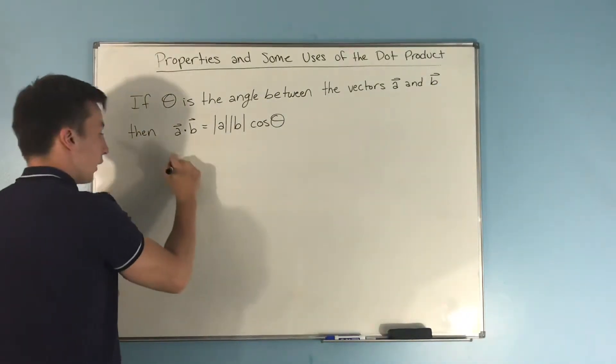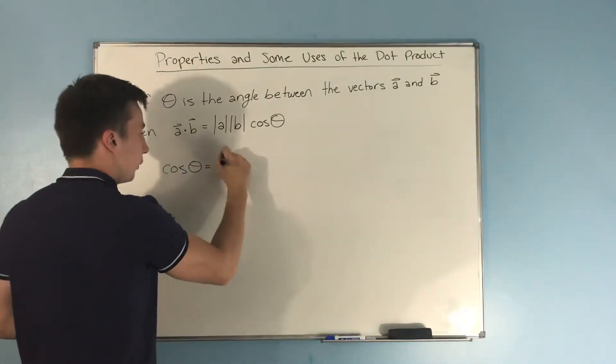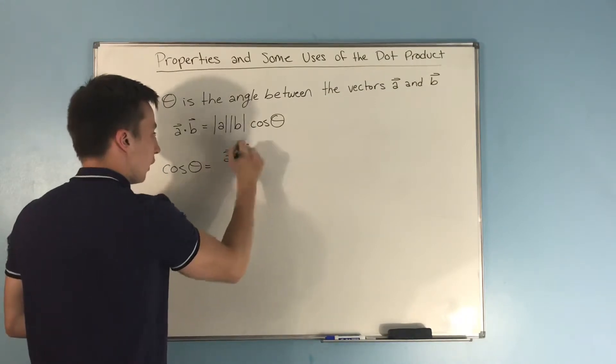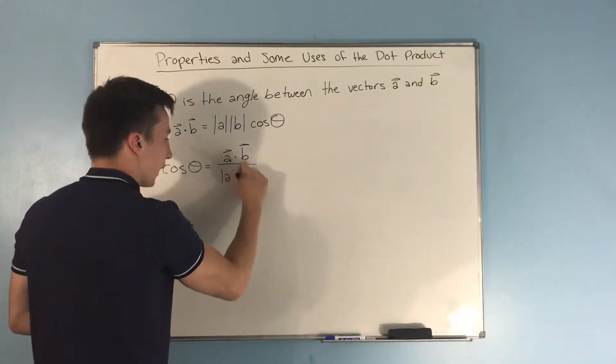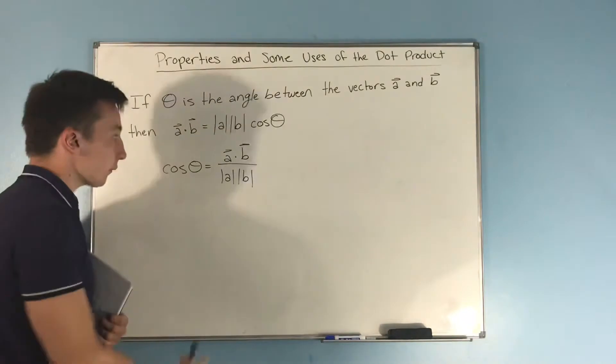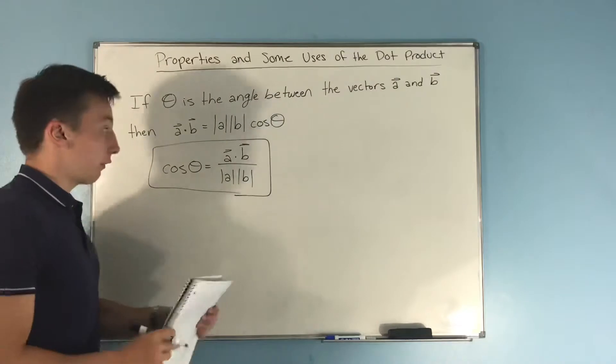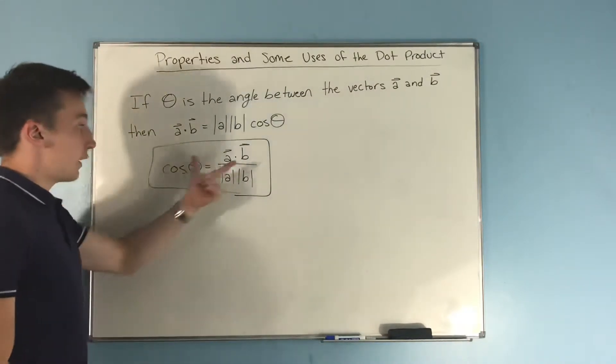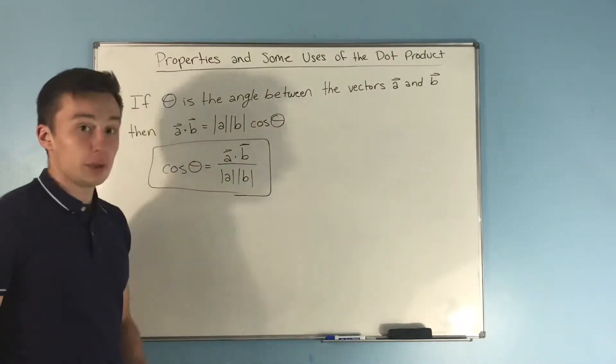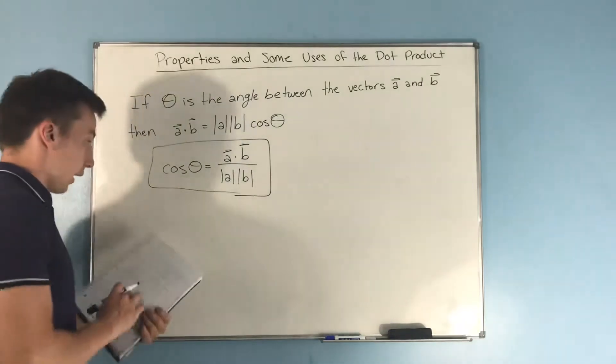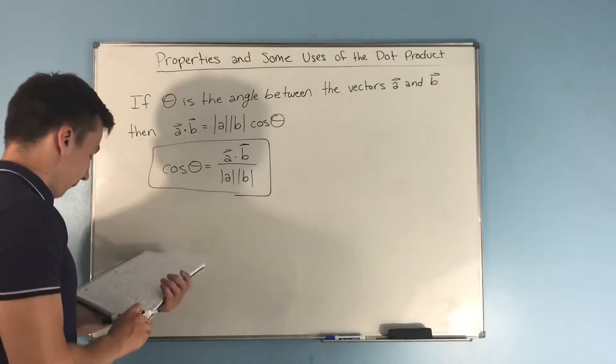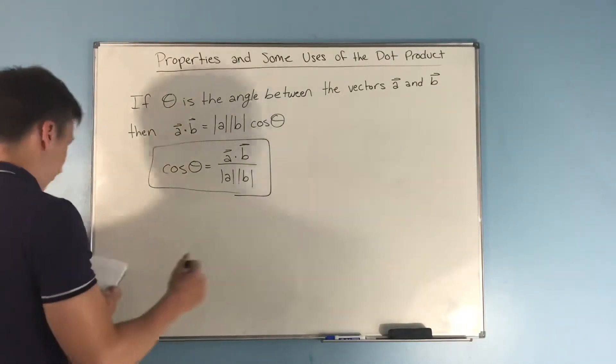Anyway, solving for cosine here, we get that cosine theta is equal to a dot b over the magnitude of a times the magnitude of b. Now this is something that you should definitely know. You're able to find the angle of two vectors with the dot product and dividing by the magnitude of each vector, and those are being multiplied together.